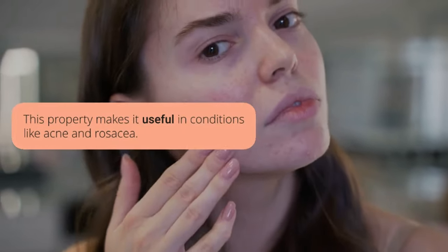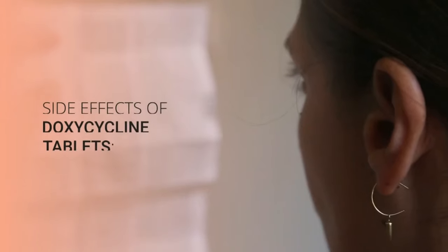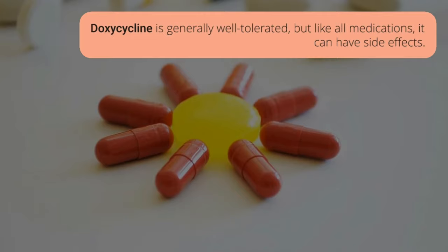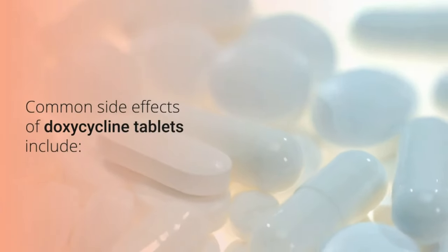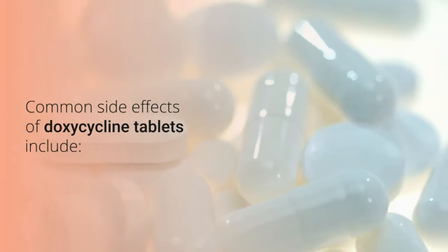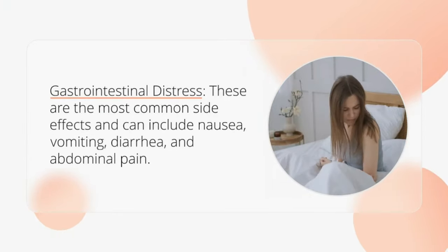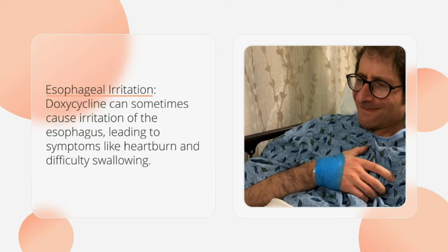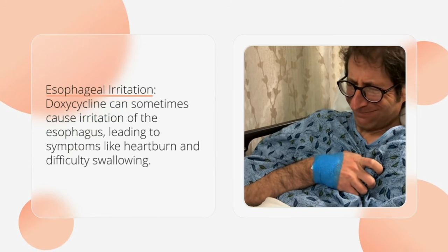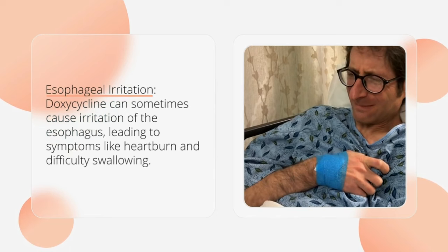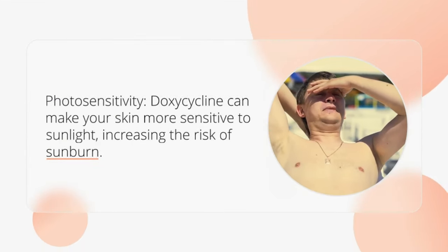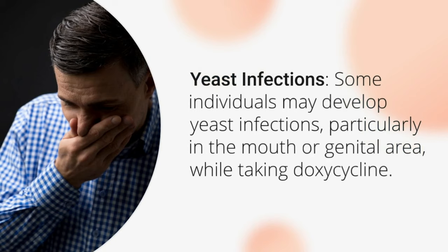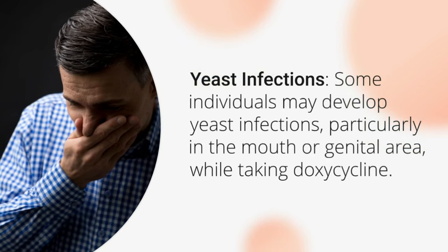Side effects of doxycycline tablets. Doxycycline is generally well tolerated, but like all medications, it can have side effects. Common side effects include gastrointestinal distress such as nausea, vomiting, diarrhea, and abdominal pain. Doxycycline can also cause esophageal irritation, leading to symptoms like heartburn and difficulty swallowing. It can make your skin more sensitive to sunlight, increasing the risk of sunburn. Some individuals may also develop yeast infections, particularly in the mouth or genital area, while taking doxycycline.